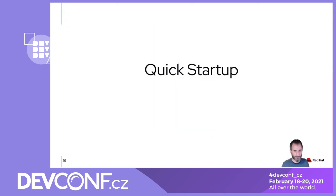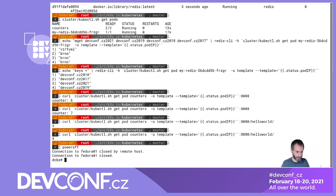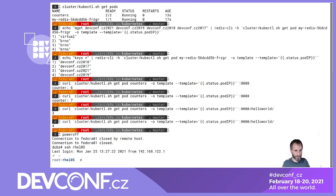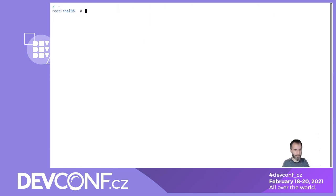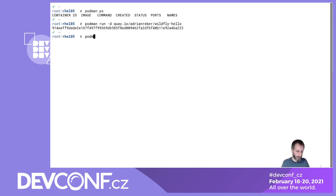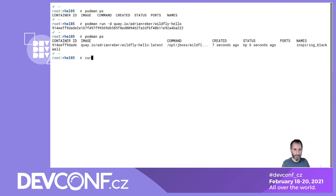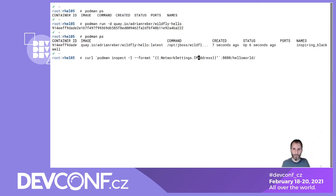Another possibility is using container migration technology for quick startup. I'll show a short demo about this. This time I'm using Podman on a RHEL 8 machine. Running 'podman ps' — no container running. Let me start a container: again my WildFly-based container, because it's a nice container for showing stateful behavior.